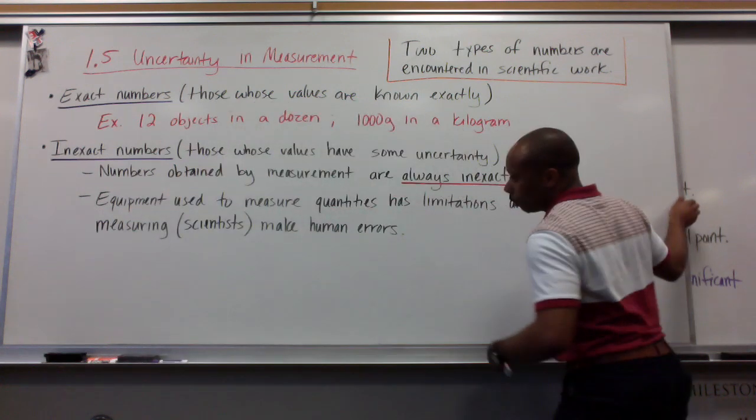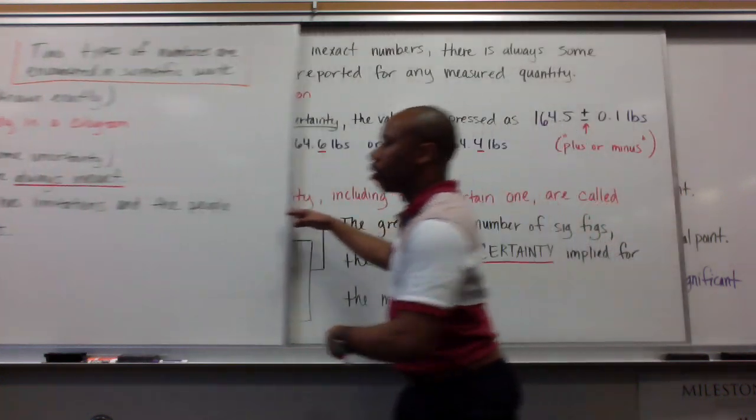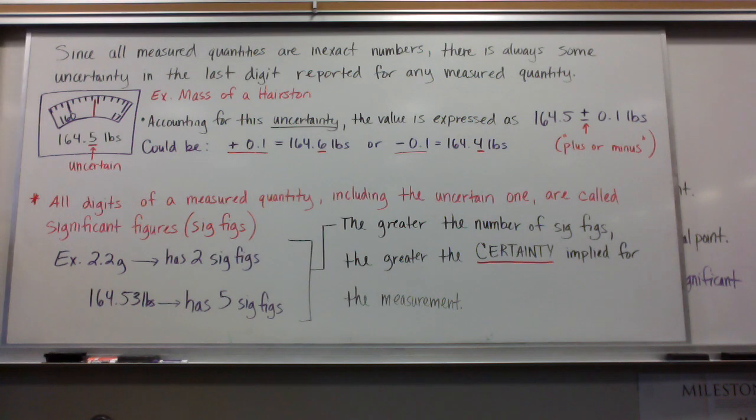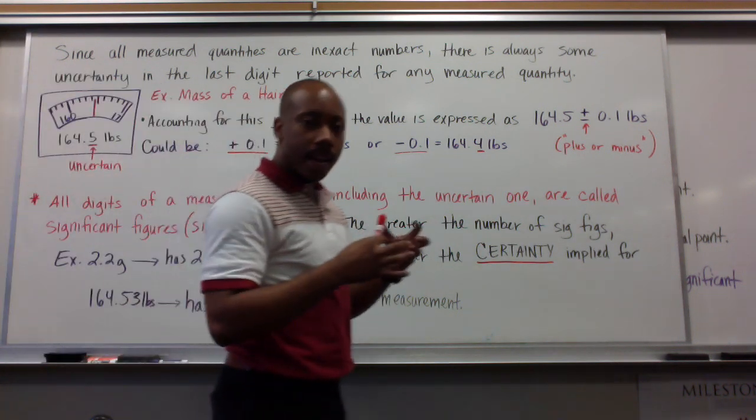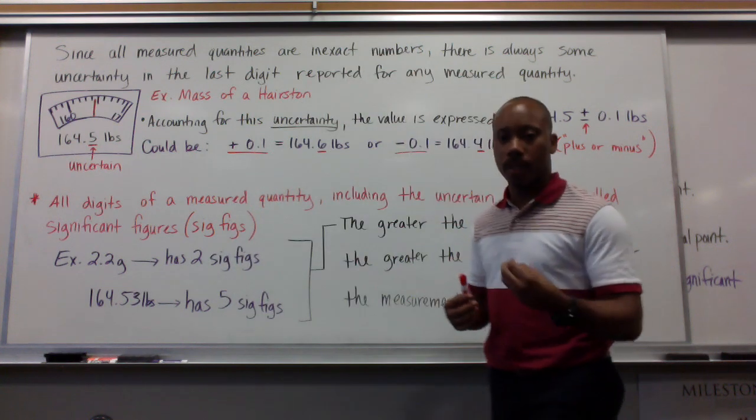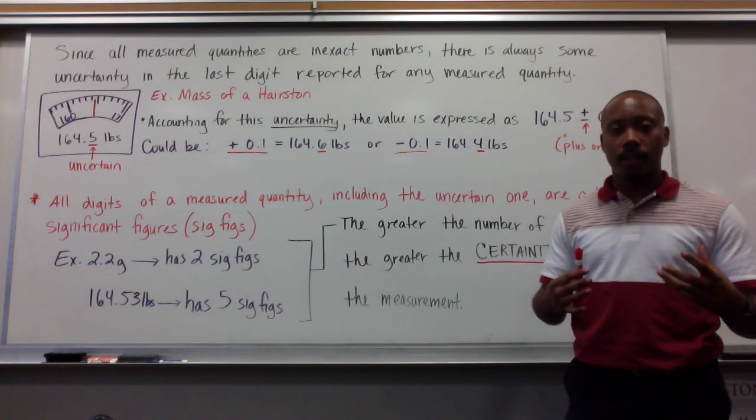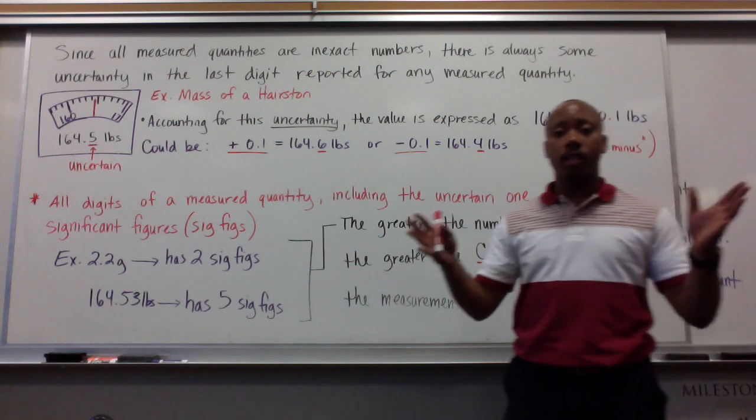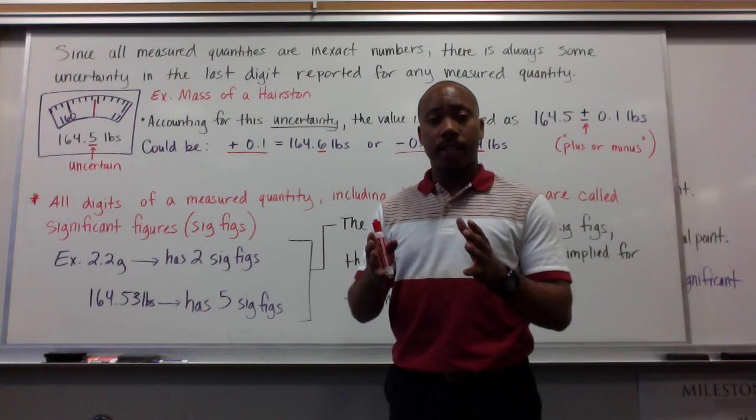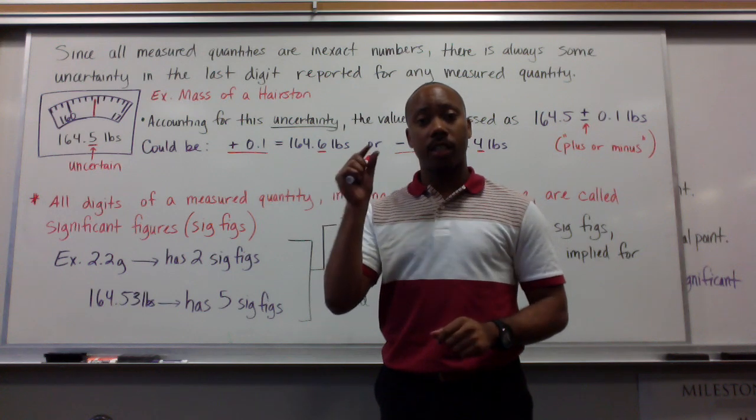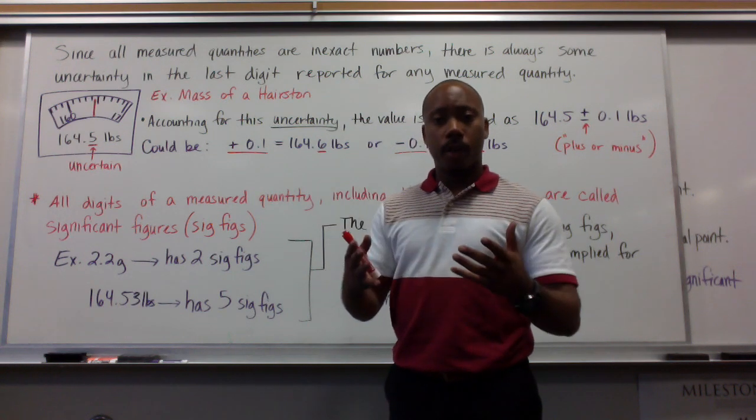So, since all measured quantities are inexact numbers, there is always some uncertainty in the last digit reported for any measured quantity. First and foremost, there's always uncertainty in all measured quantities. Where is that uncertainty? That uncertainty is in the last digit.